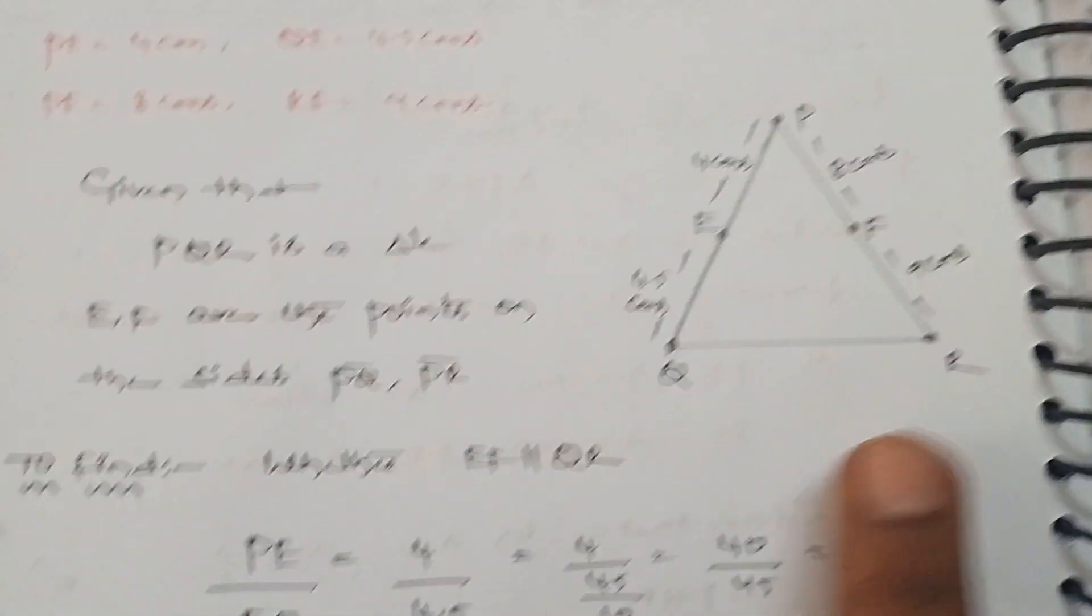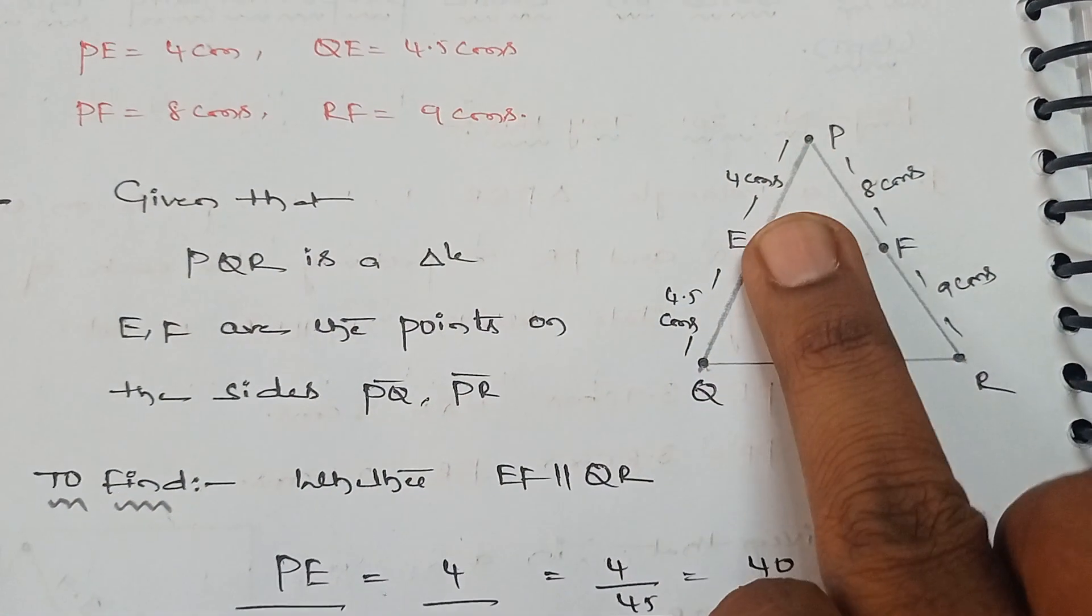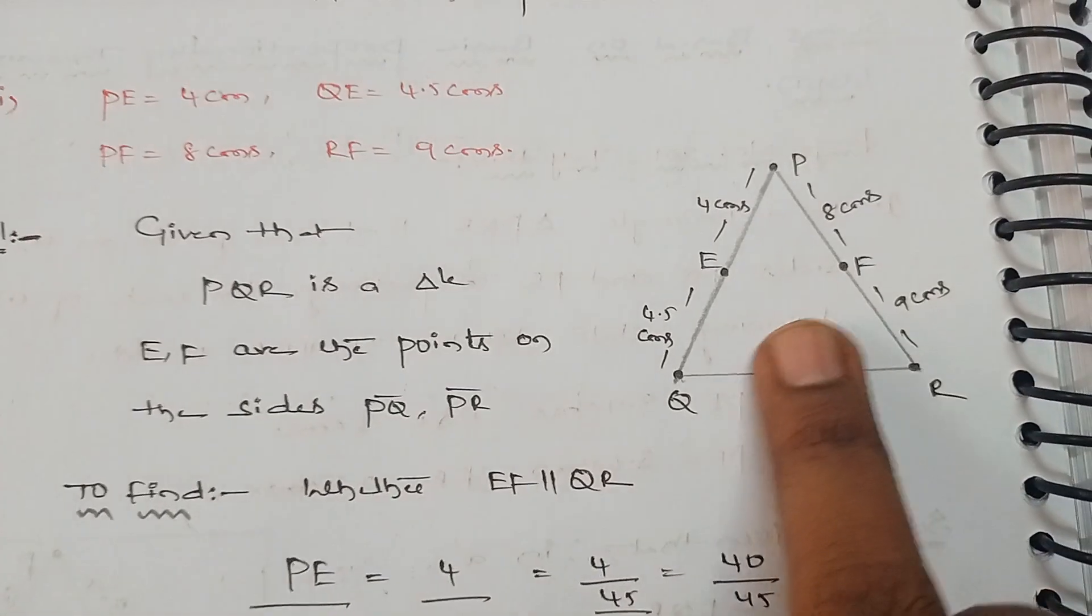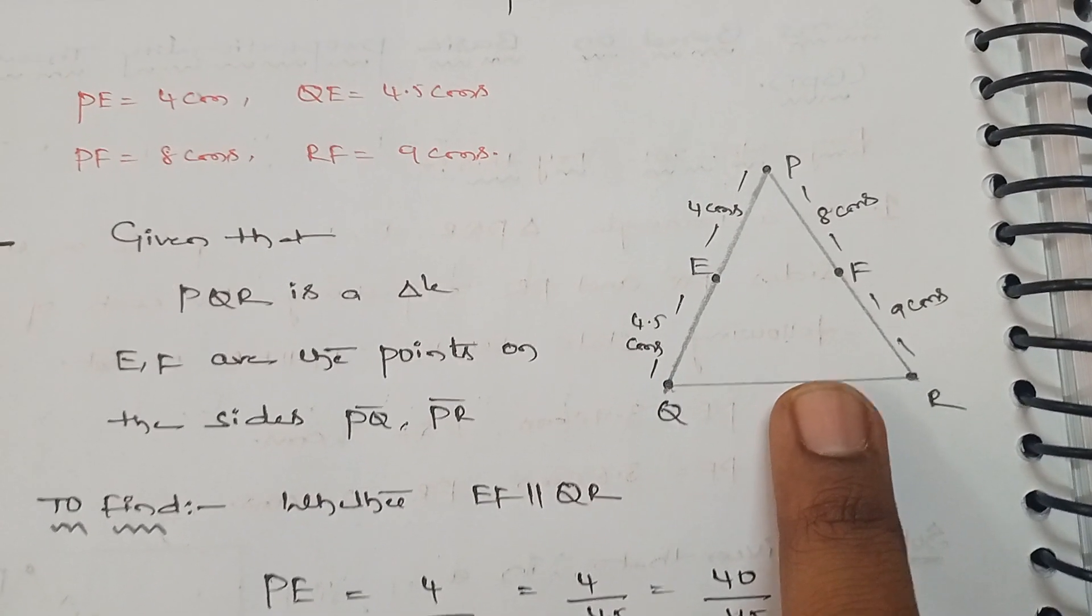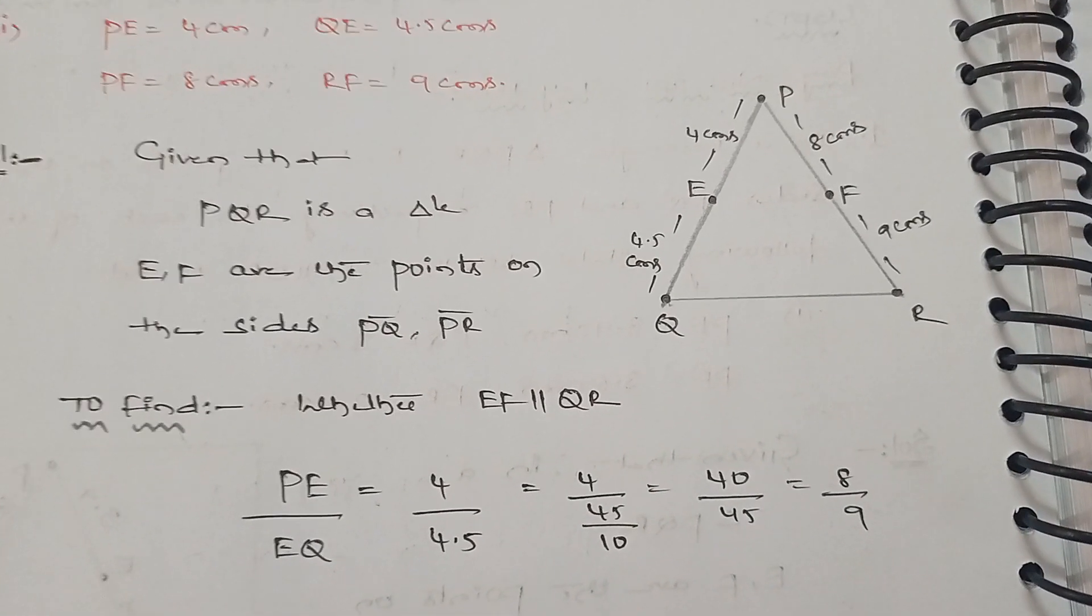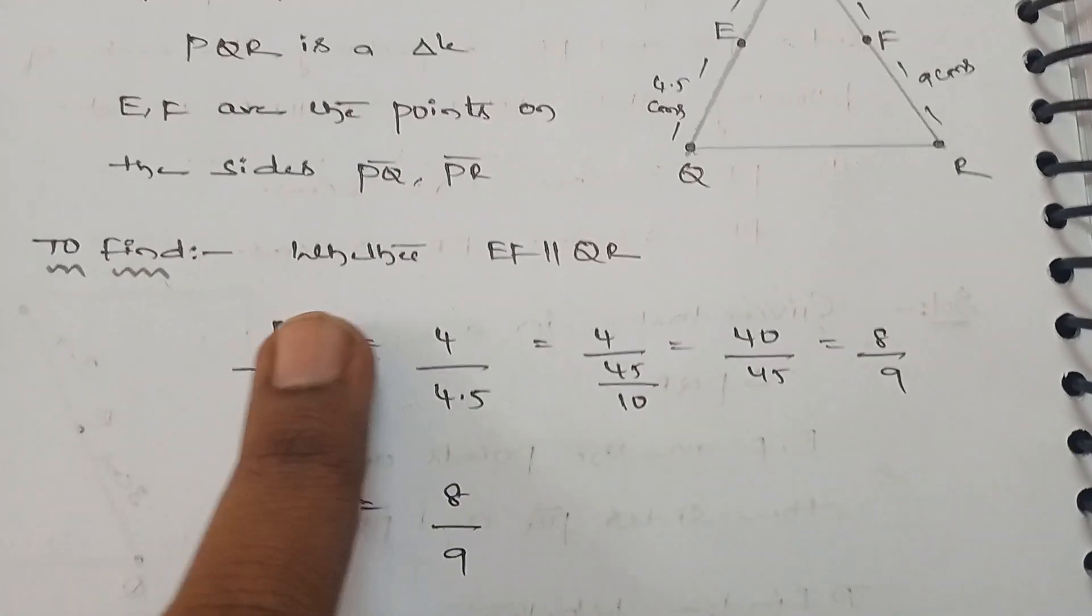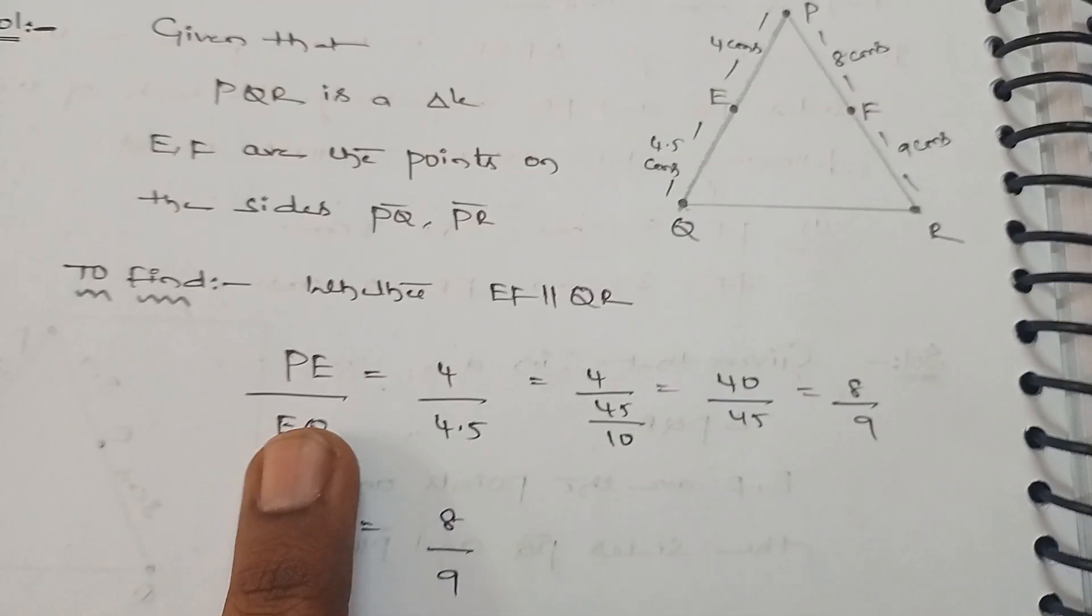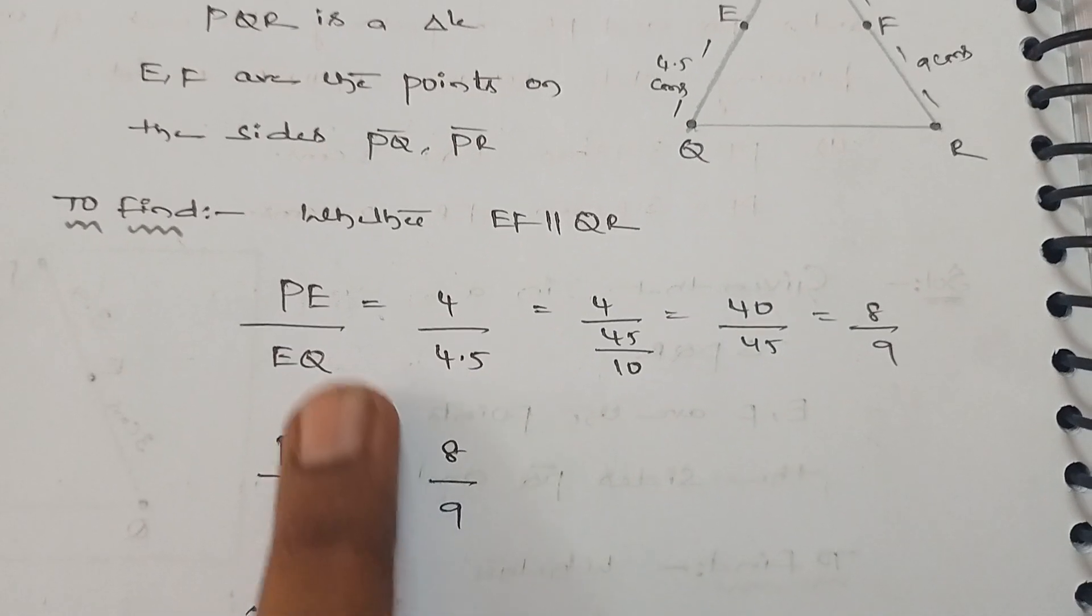Now take down the given dimensions mentioned in the question. We need to find whether EF is parallel to QR. There is no unknown value. Take down all the dimensions.